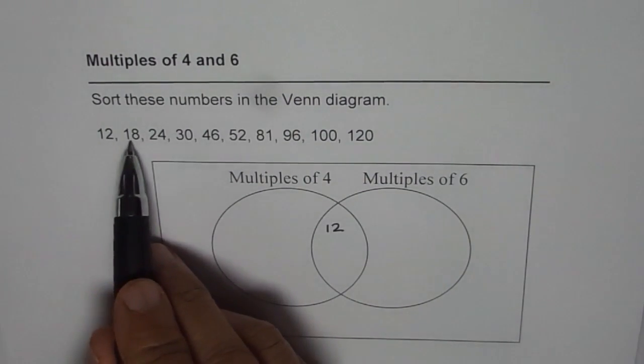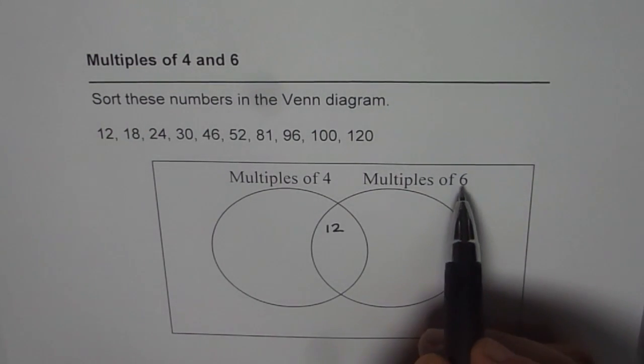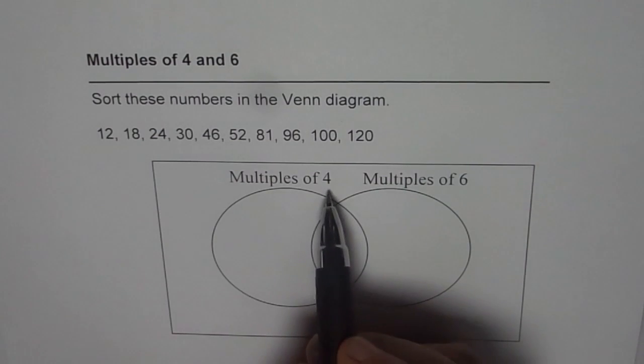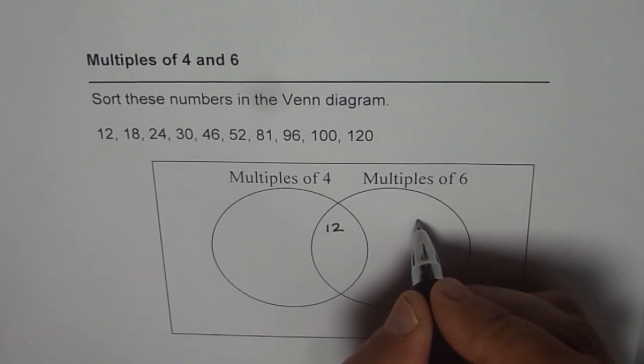Now let's look into 18. 18 is a multiple of 6—6 times 3 is 18—but not a multiple of 4. So 18 goes on this side.